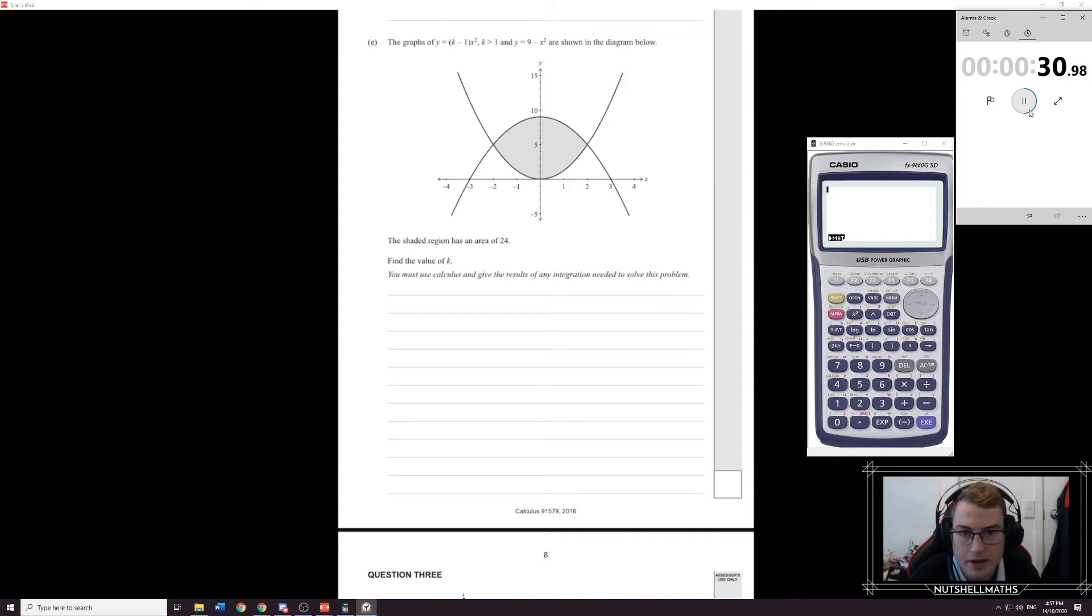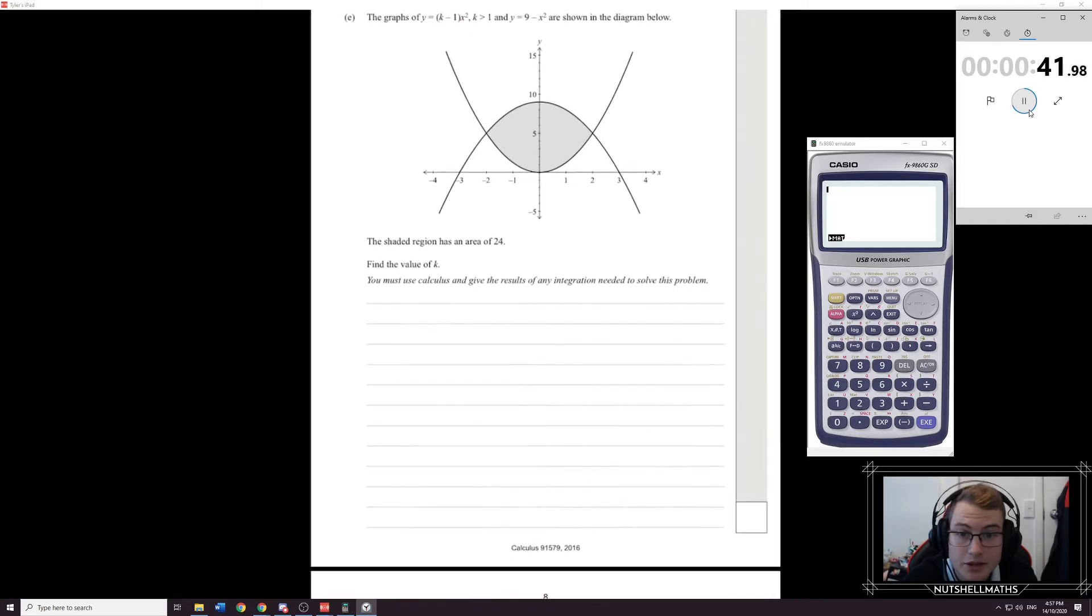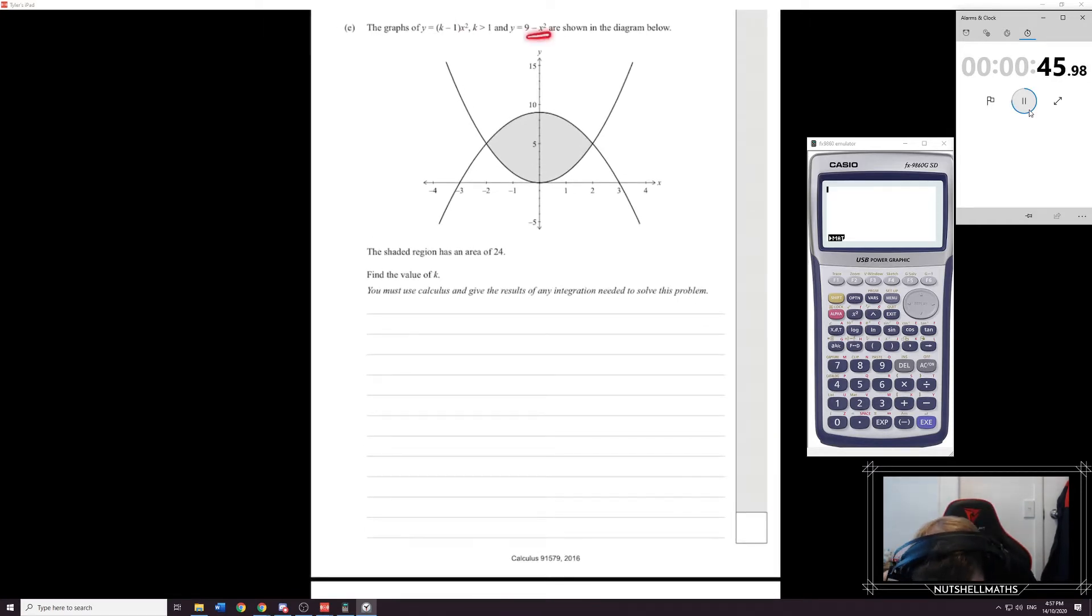If you're in doubt, I would plot them on the calculator using the graphing function, but we can use our brain a little bit. I know that they're both parabolas, they both have x squareds, you can see these x squareds here, I can zoom in a touch, there you go, but I can see this is a minus x squared, so I straightaway know that this one here should be y equals 9 minus x squared. And that means this one must be the other one, right? k minus 1 x squared. This k is greater than 1 is just saying that this number in front of x squared can't be zero, which makes sense because then the graph wouldn't exist. Or would it be y equals zero? Right, the shaded region has an area of 24. So if I find the area and set it equal to that, I should be able to find k. That's where my brain's heading. Find the value of k.